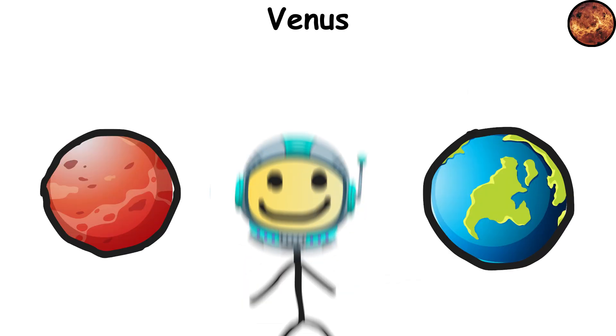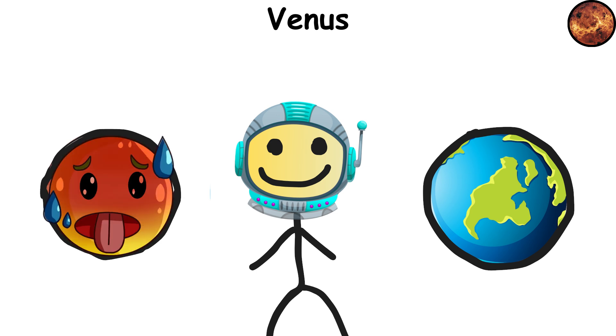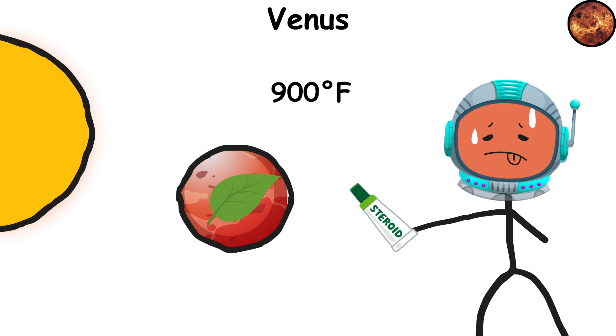Venus, Earth's evil twin. It may look all nice and shiny, but trust me, it's the definition of a hot mess. Its thick atmosphere traps heat like a greenhouse on steroids, making it the hottest planet in the solar system. 900 degrees Fahrenheit, 475 degrees Celsius, hot enough to melt lead.